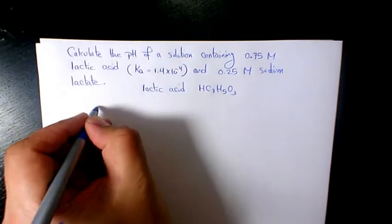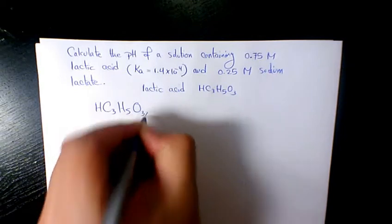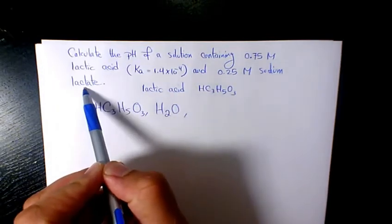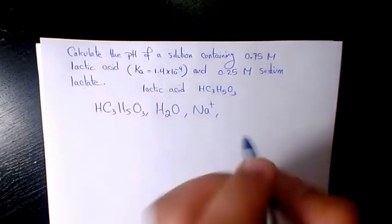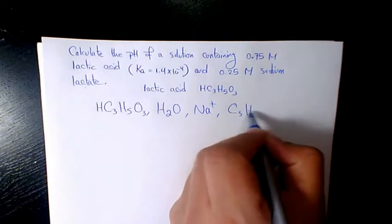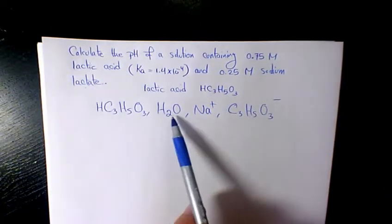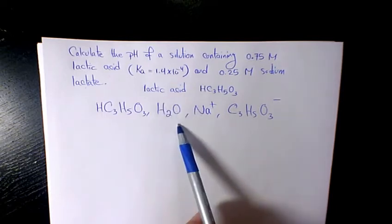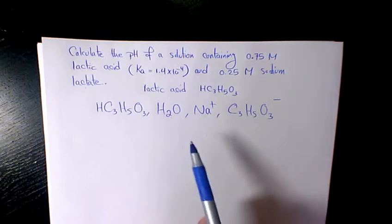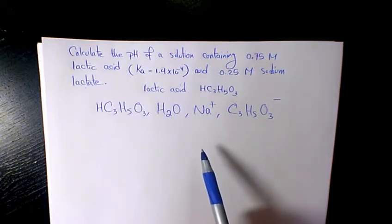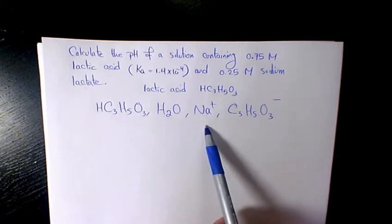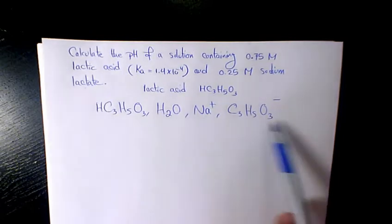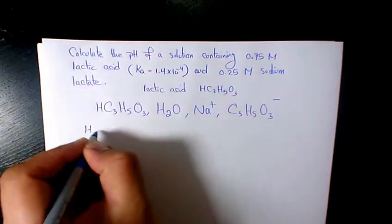We have lactic acid, HC3H5O3. We have water and we have sodium lactate. Sodium lactate dissociates into sodium and the lactate part, which is going to be C3H5O3 minus. H2O is neutral so it is a very very weak acid or very very weak base, so it doesn't control the pH. Na plus is the conjugate acid of NaOH. NaOH is an extremely strong base so Na plus is going to be an extremely weak conjugate acid. So these two don't control the value of pH. So we need to focus on lactic acid and the lactate ion.